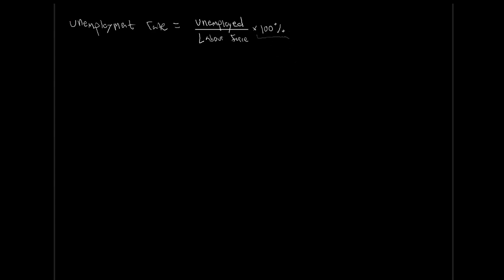Keep in mind: if we omit the ×100%, instead of getting something like 3%, we would just get 0.03. Either is perfectly acceptable. On our quizzes and exams, I will always specify how I want you to report it — typically I'll say record it as a decimal to however many decimal places I want. In the exam situation, we'll usually just report it as a decimal.